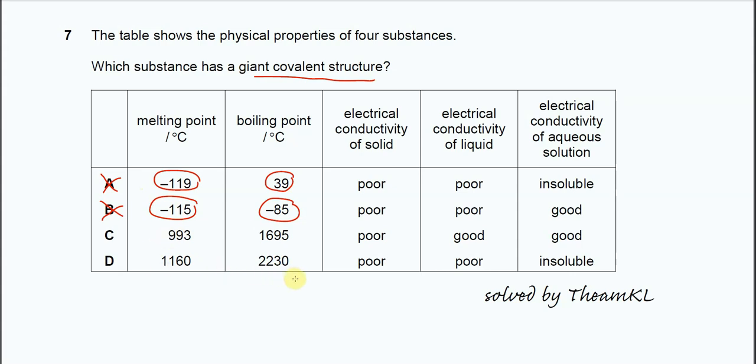We can use the other physical properties to compare, like electrical conductivity in solid, liquid, and aqueous solution. For this C, electrical conductivity of liquid is good. It's telling us that most likely this giant structure is ionic structure, giant ionic. Because when it's in liquid form, when it's melted, those ions can move and carry the charge. Therefore we know that C is the ionic compound.